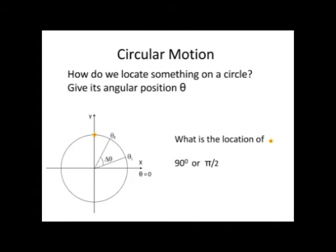Now, to locate the position of a particle on a circular path, we measure the angle between the radius vector. As you can see from the diagram, the position of a star can be measured by 90 degrees as it moves from the x-axis to y-axis along the arc.